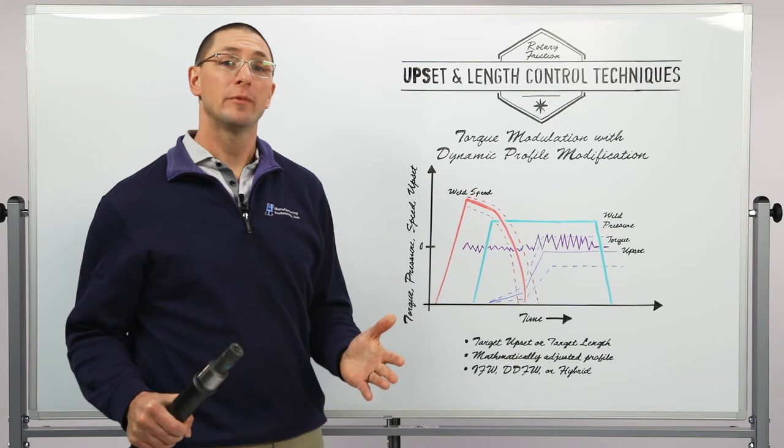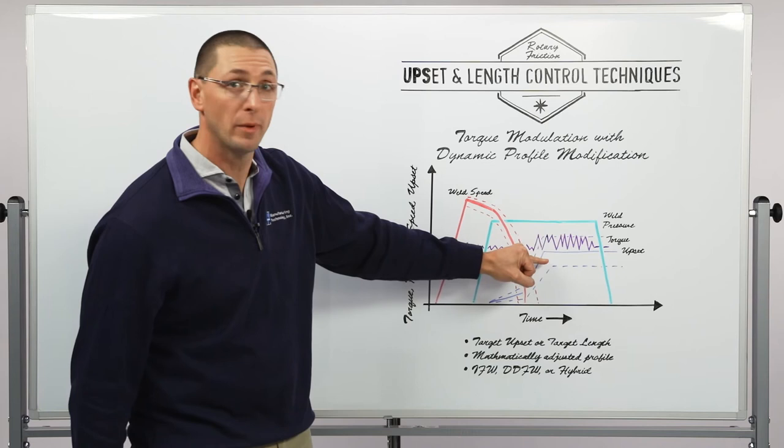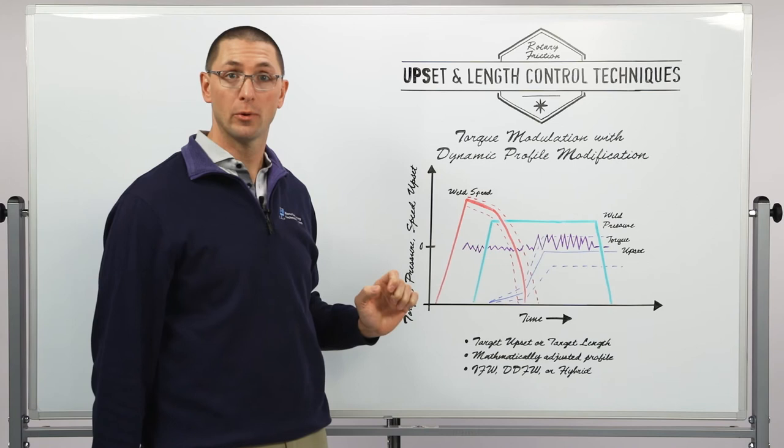Now if my incoming parts are too short then I'm going to need less upset. So I might need to mathematically adjust my upset profile to get less upset and possibly even start my weld speed lower in order to have less energy to start the weld.